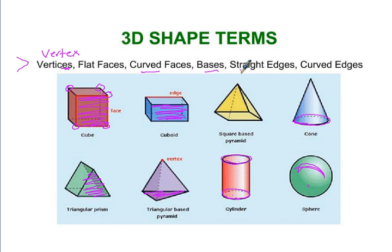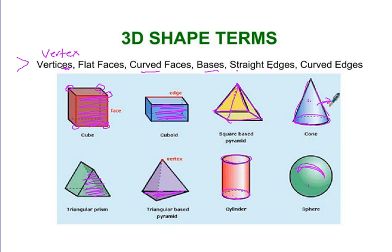And then straight edges — these are all straight edges. Any of the lines that make up the shape are straight. Now, there's no edges on this cone. These lines you see here are just the part where it disappears and goes back off into no man's land back there.